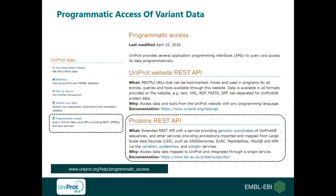If you are more interested in a large-scale approach to analyze variants involved in disease, we offer programmatic access to human variant data in UniProt. You will find this on the main UniProt page under UniProt data, programmatic access, where you can access data through the Proteins REST API. You can access coordinates for curated variants as well as imported variants from large-scale data sources, including genomic coordinates.